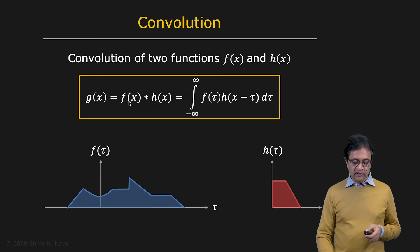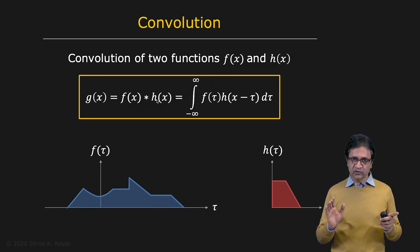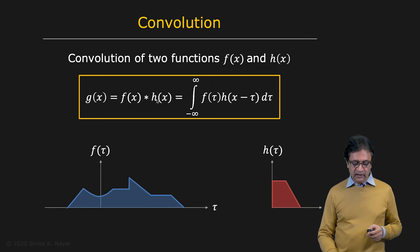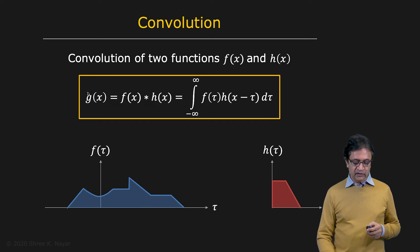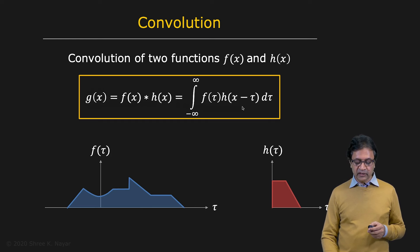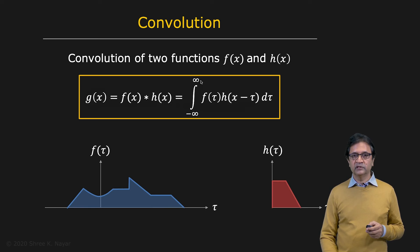So f convolved with h — not convoluted; convoluted has a whole different meaning, it means complicated — gives you the result g. So f convolved with h is defined mathematically as f of tau times h of x minus tau, integrated over tau from minus infinity to plus infinity.